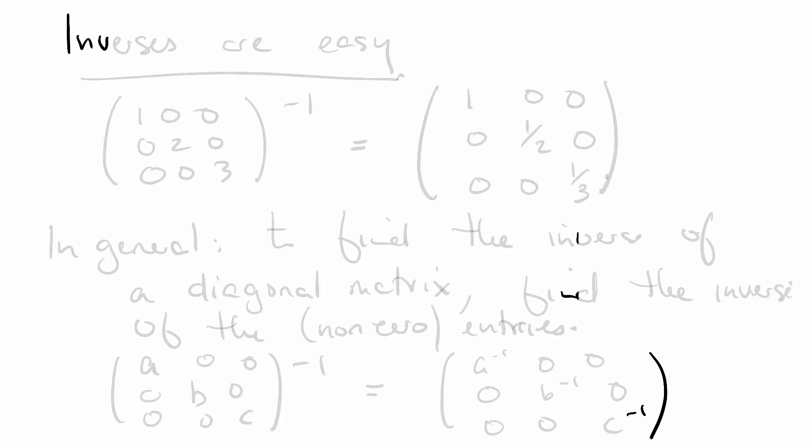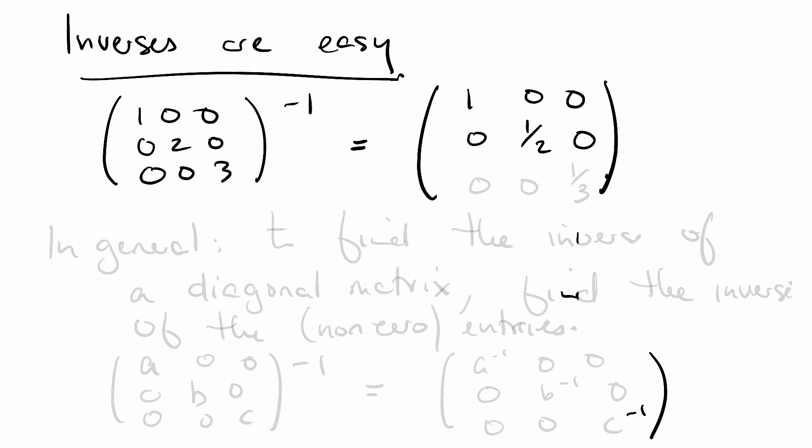So say I wanted to find the multiplicative inverse of our diagonal matrix here. What we're going to get is 1, 0, 0, 0, a half, 0, 0, 0, 1 third.